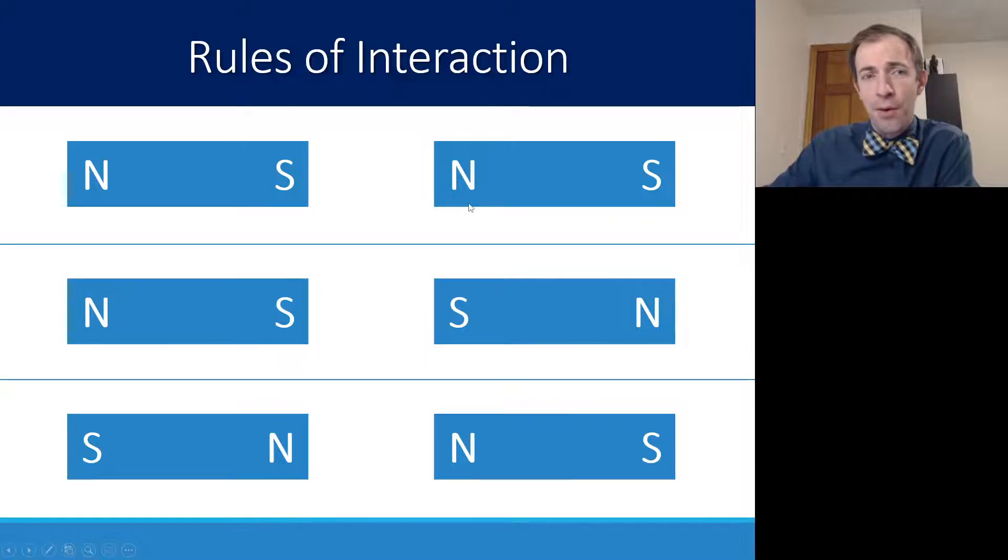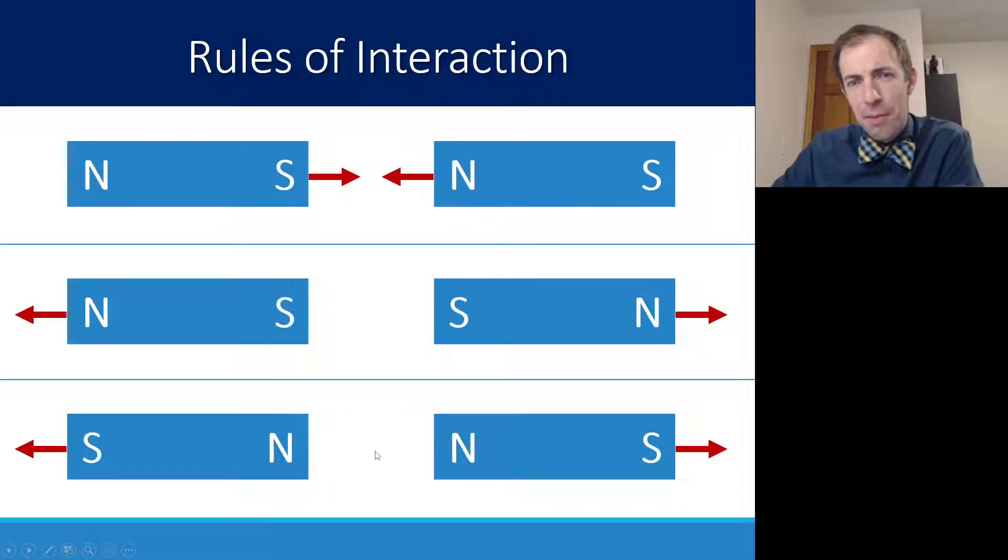Opposite poles will attract each other and like poles will repel. So if you have north and south, they attract. South to south, they repel, or north to north, they repel.